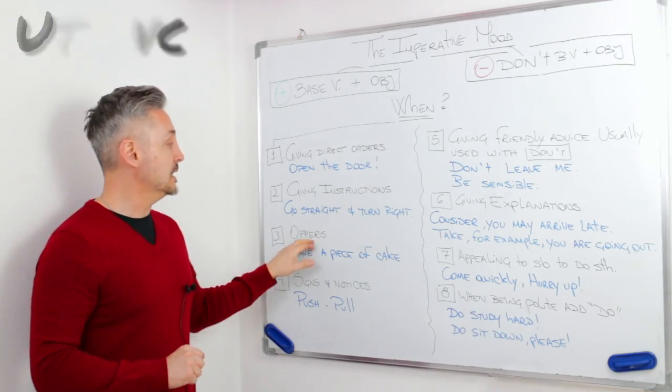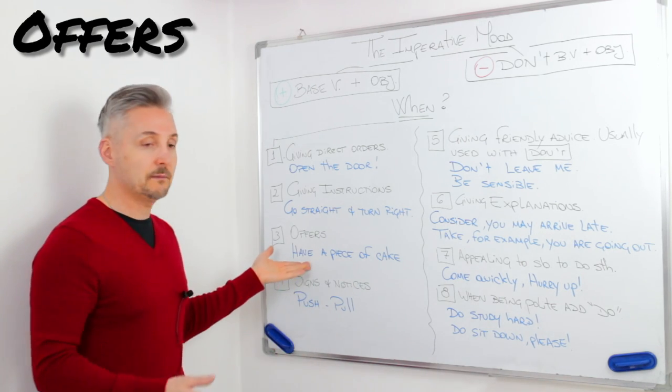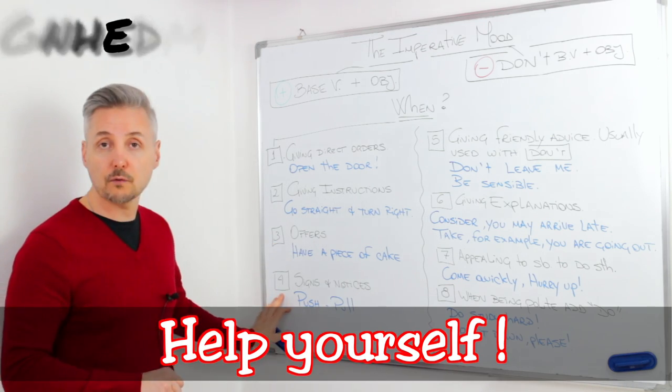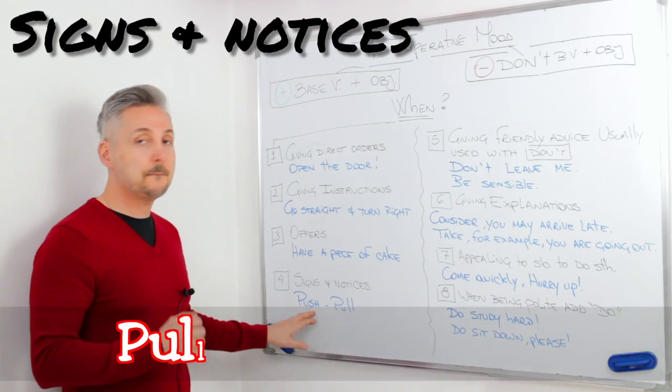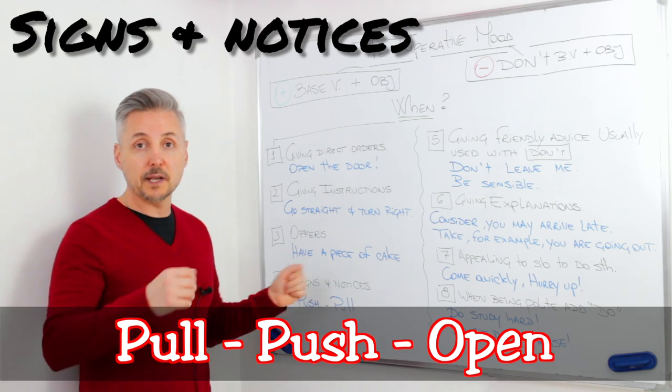The third one is for offers. I have a guest, and I tell them, have a piece of cake. Help yourself. The fourth one, signs and notices. So pull, push, open, etc.